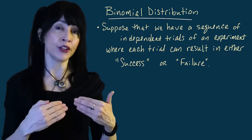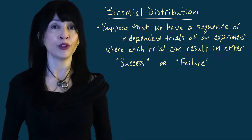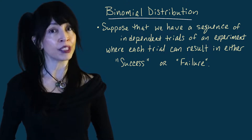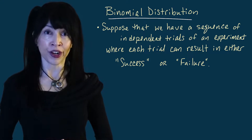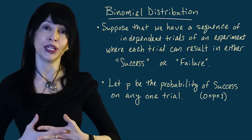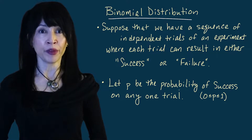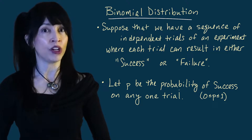Let's jump right in with the binomial distribution. Here is the setup, sounding very similar to our setup for the geometric distribution. We're going to have a sequence of independent trials of an experiment where each trial can result in one of two possible outcomes, success or failure. And we're going to have a parameter, little p, which is going to be a probability between zero and one, representing the probability of success on any one of those trials.